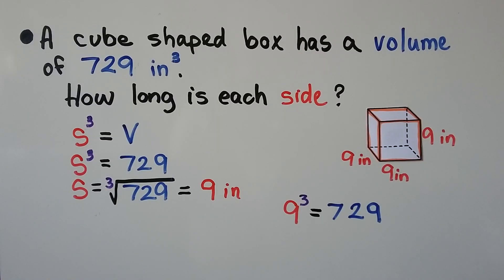A cube shaped box has a volume of 729 inches cubed. How long is each side? We find the cube root of 729. 9 times 9 times 9 is equal to 729, so we know the side length is 9 inches. 9 cubed is equal to 729.